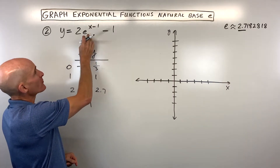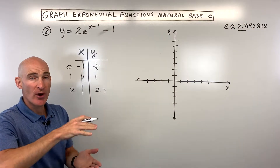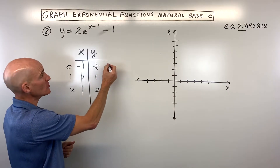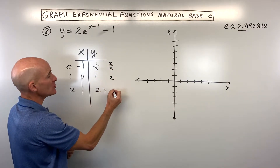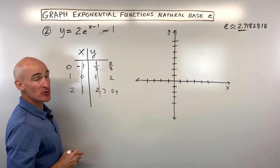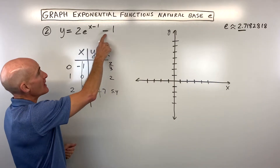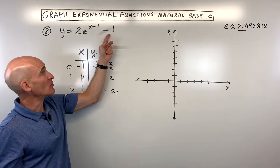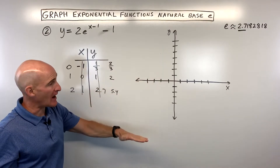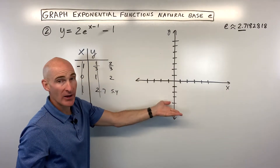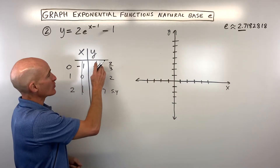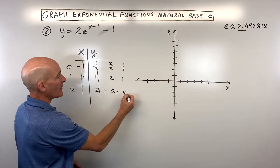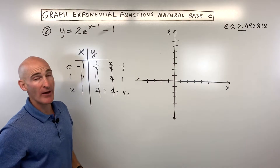This 2 here, working from the inside out, is going to be a vertical stretch by a factor of 2 — it multiplies all the y-values by 2. So they become two-thirds, 2, and 5.4. Lastly, the minus 1 outside is going to shift the graph down 1, subtracting 1 from the y-values, putting us at negative one-third, 1, and 4.4.